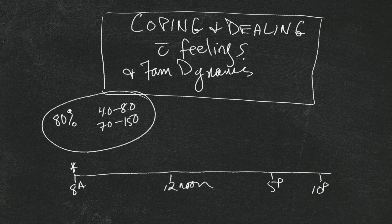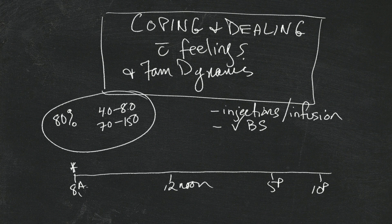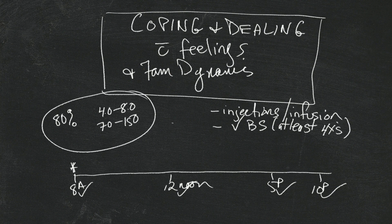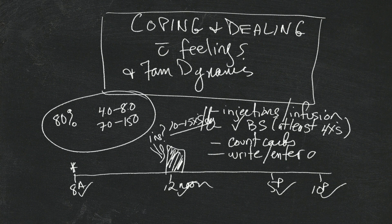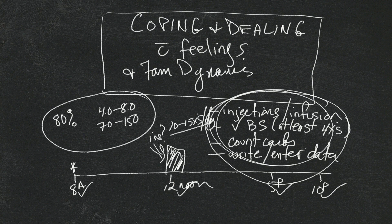We have to take our injections or put our infusion sets in if you're on a pump. We have to check our blood sugar at least four times a day — I usually check mine about 10 to 15 times a day, as do most of my friends who are taking care of themselves. We have to count the carbs — how much carbohydrate we're eating — to figure out how much insulin. And we have to write the numbers down or enter the data somewhere. This is all before finding out how much homework we have. That is a lot of extra work.